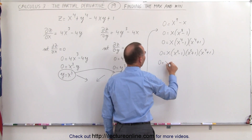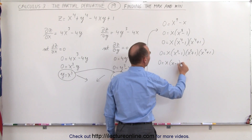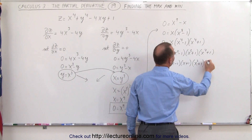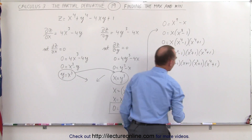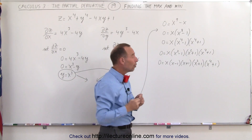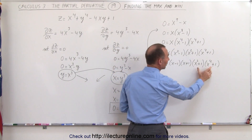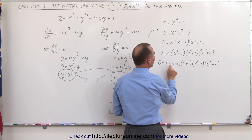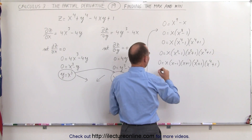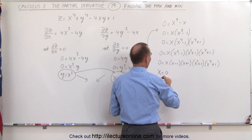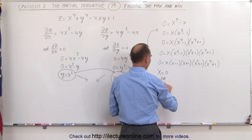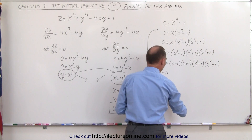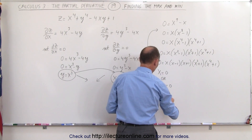Finally, we can write 0 equals x times x minus 1 times x plus 1 times x to the 4th plus 1. You can see that there are no real values of x that make the last two binomials equal to 0. But the first three factors can each equal 0, meaning either x equals 0, x minus 1 equals 0, or x plus 1 equals 0.